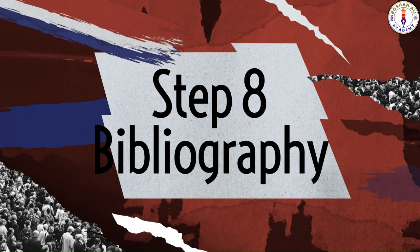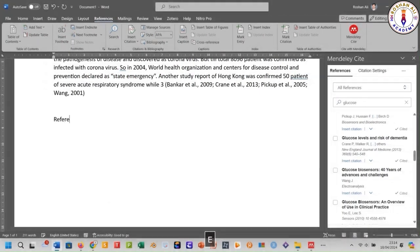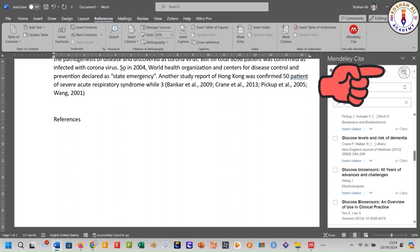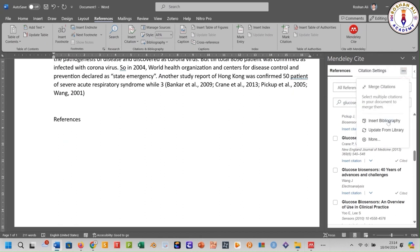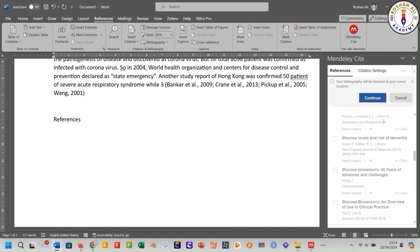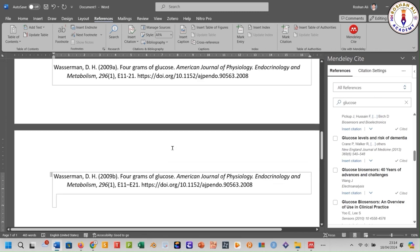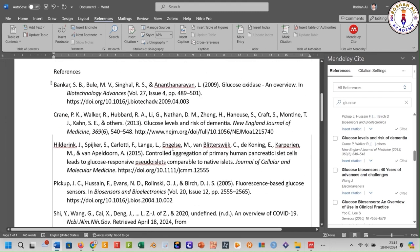Step number eight: inserting the bibliography or references list. To insert the bibliography at the end of the document, type 'References' here and click Enter. Click on the three dots, then insert your bibliography and click Continue. Here is your bibliography.